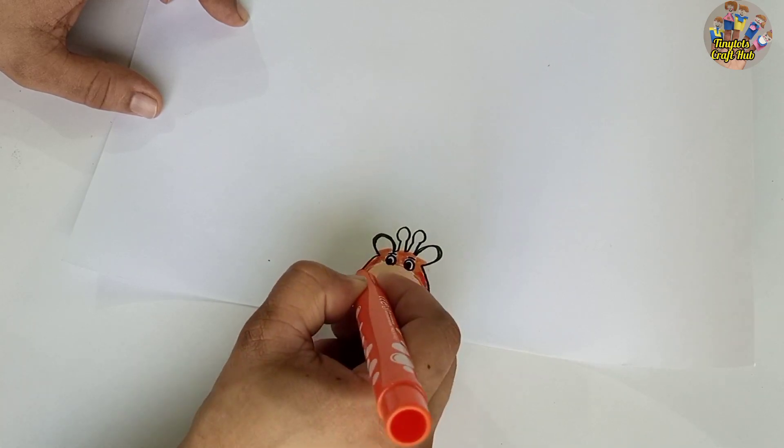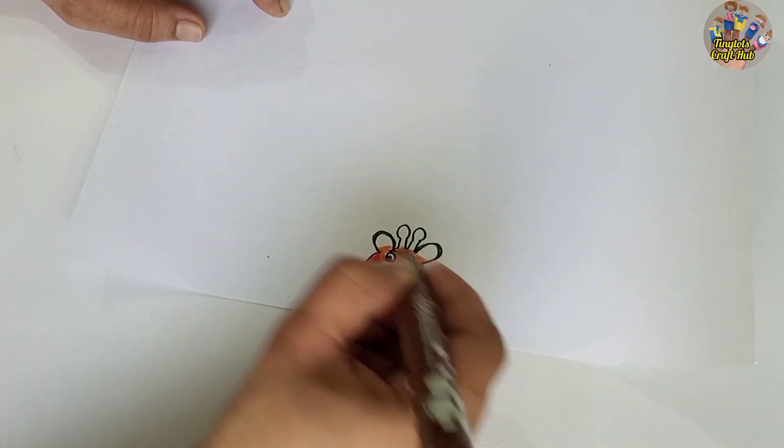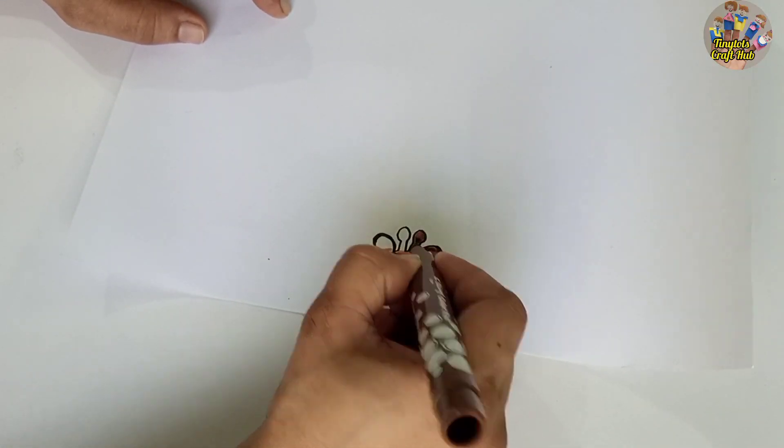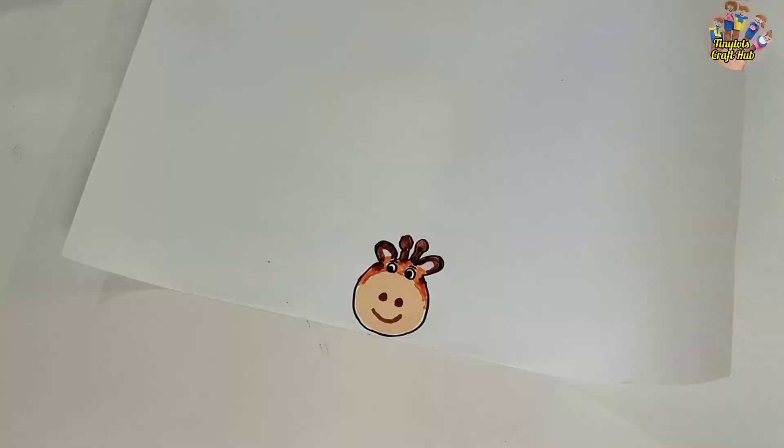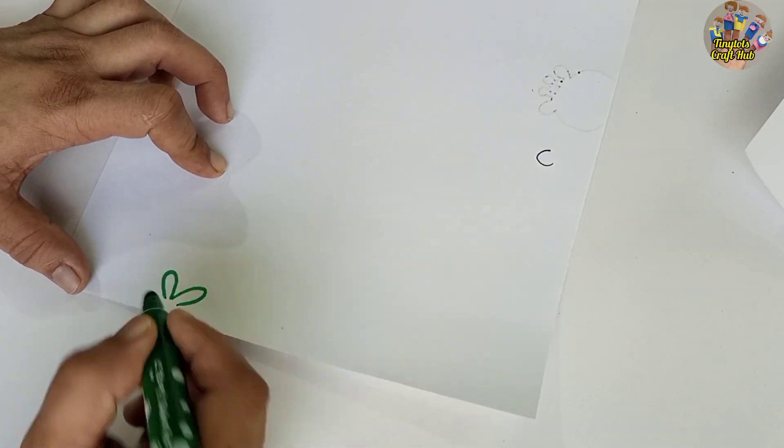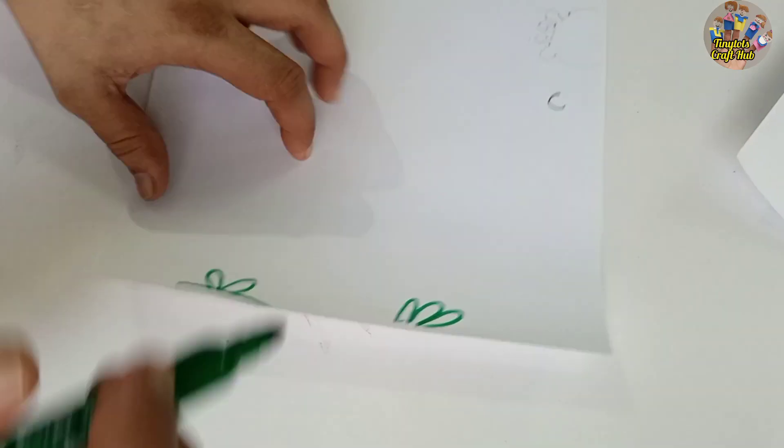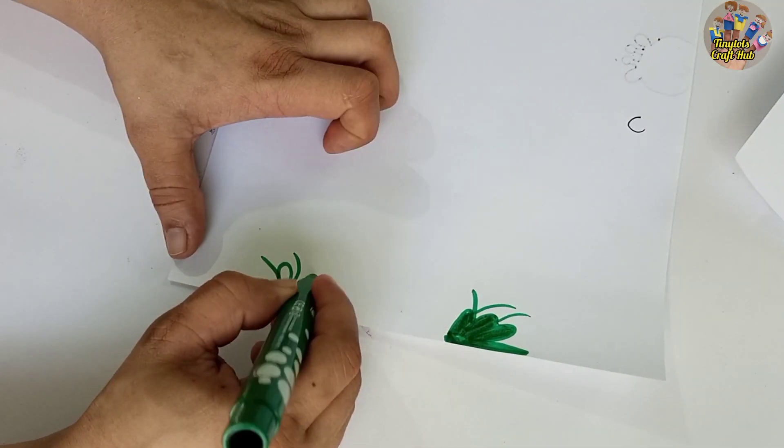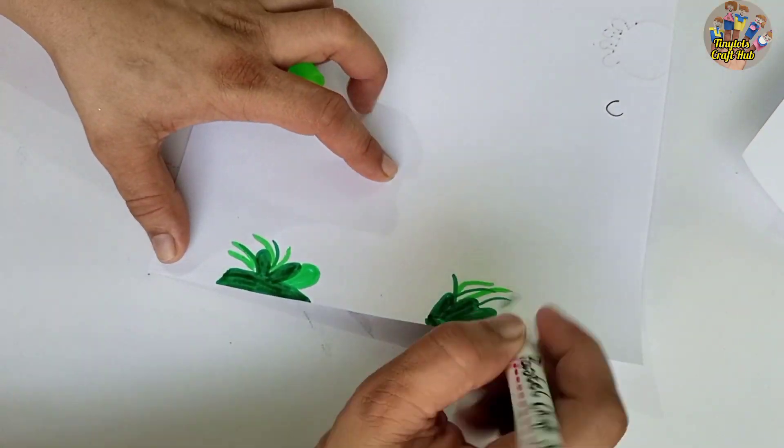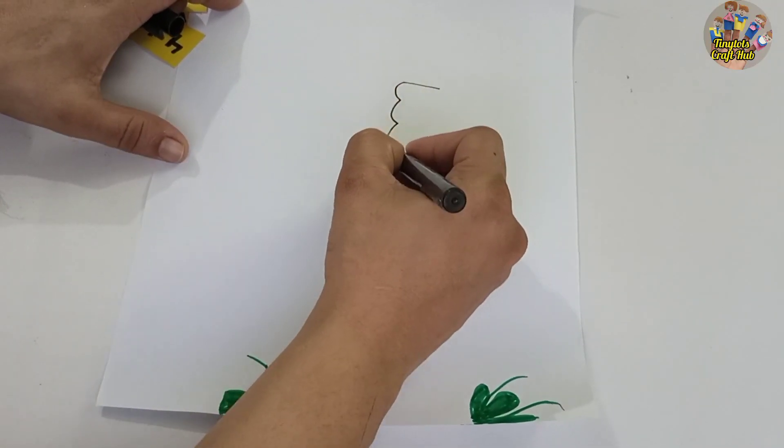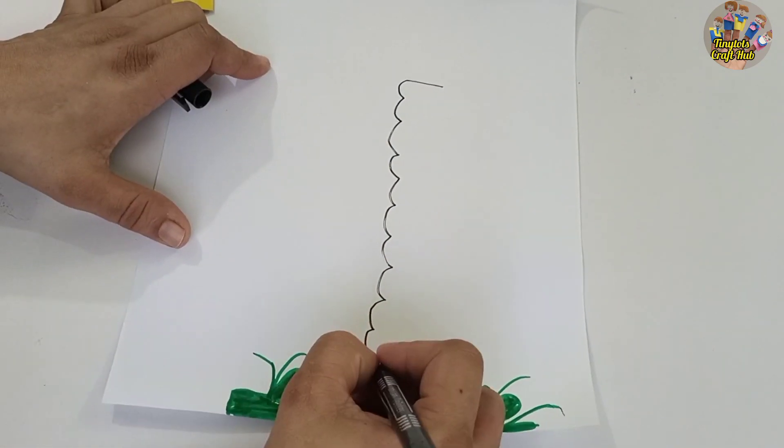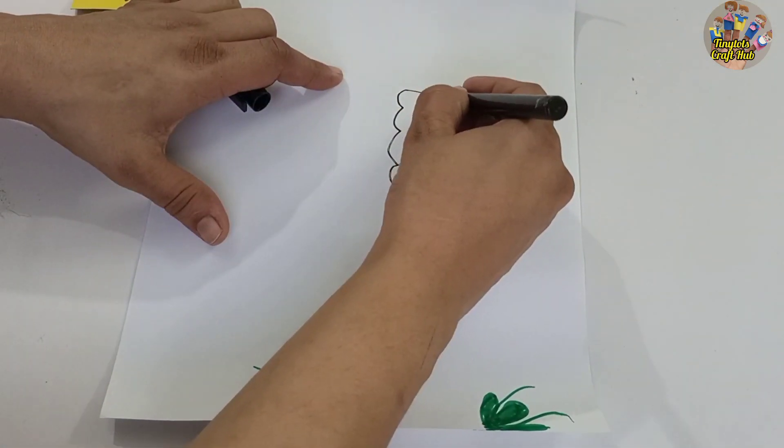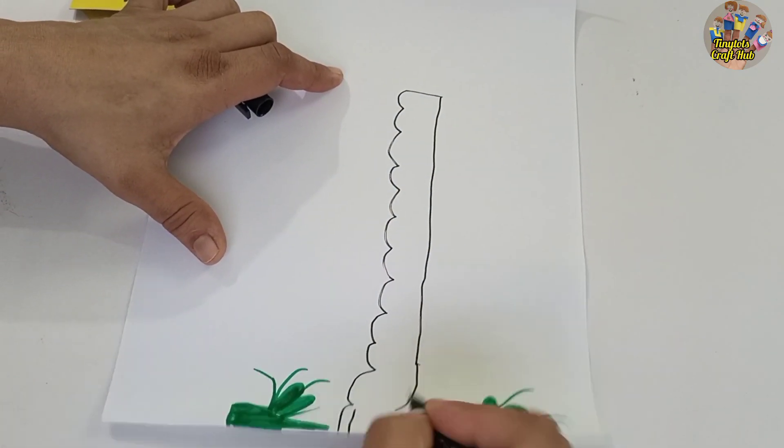And then later on you will color it with more skin color and give it a texture look. So now you will take the next page, another page, and you will draw some grass like this. It is an A4 size page and you will draw in the downside. This is the long neck of the giraffe, so you will draw the rest of the body like this.